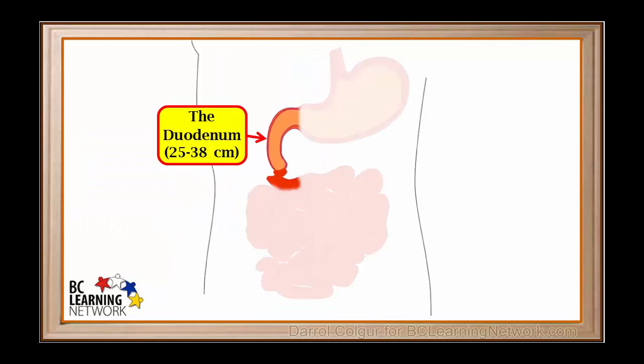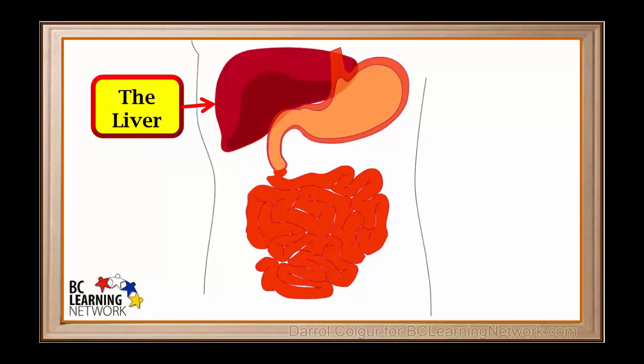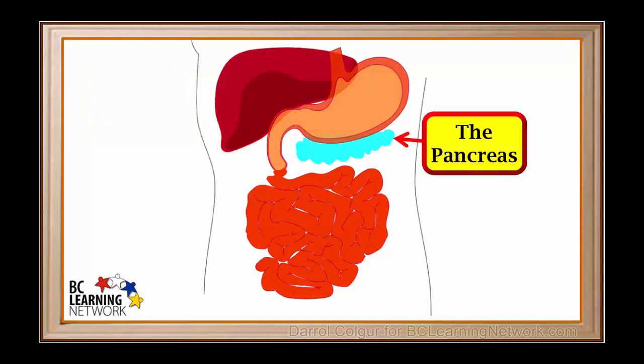The first 25 to 38 centimeters section of the small intestine is called the duodenum. This is where most of the digestion in the small intestine occurs. The liver is a large organ with many different functions. One of its functions is to produce bile, which is important in digestion. The pancreas is an organ located just below and behind the stomach. It produces many substances that are important for digestion.